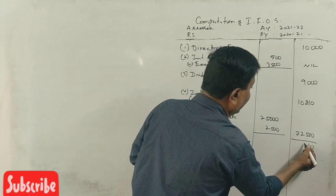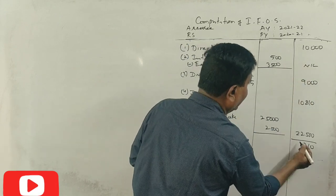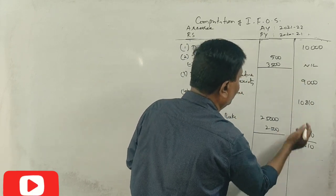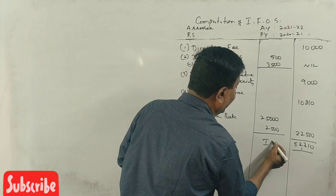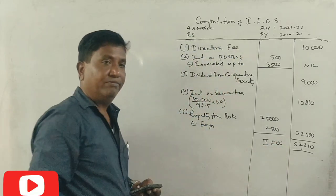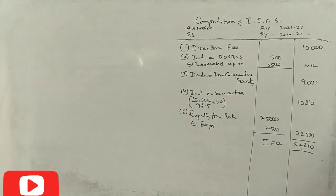5, 13, one carry 3, 12, one carry 3, 4, 5. 52,310 is the income from other sources. Clear? Yes, sir.